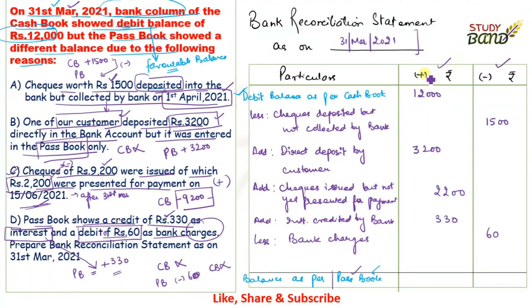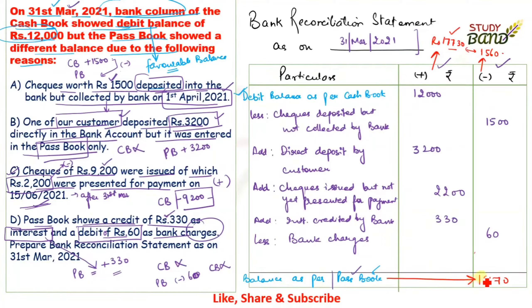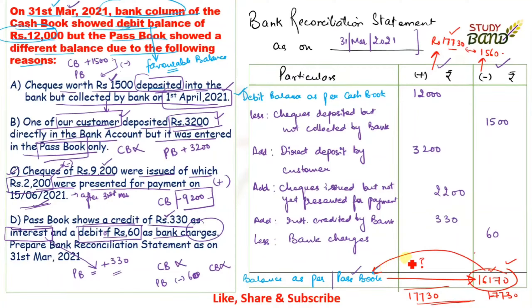Fifth adjustment: the pass book shows a debit of rupees 60 as bank charges. The bank deducted 60 for charges — the pass book was debited (minus 60) — but the cash book has no entry. We need to deduct 60 as well. Less — bank charges = rupees 60. Now total the positive side: rupees 17,730. Total the negative side: rupees 1,560. The difference: rupees 16,170 — this is the balance as per pass book.